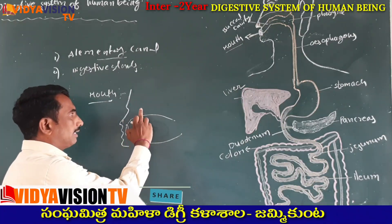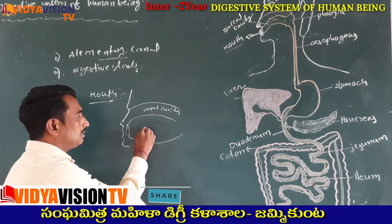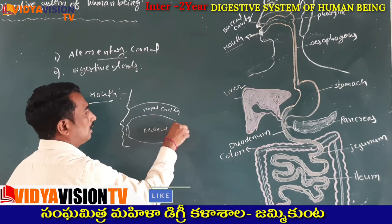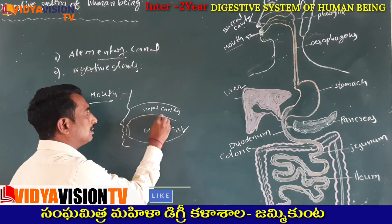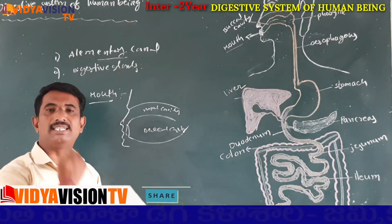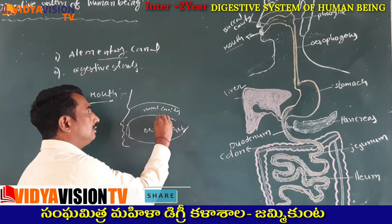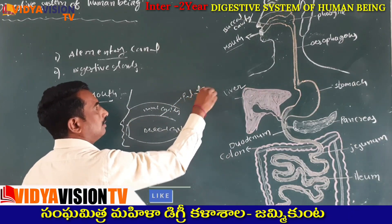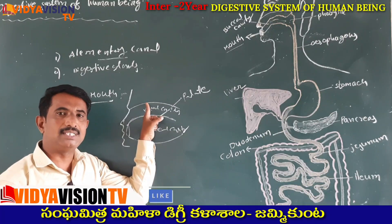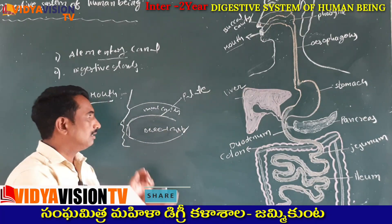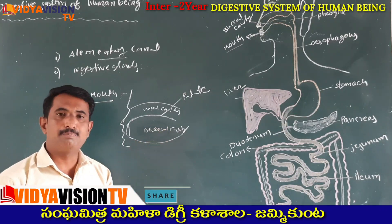Inside the buccal cavity, observe here — this is called the nasal cavity. The nasal cavity and buccal cavity are both separated by the palate. The roof of the buccal cavity is called the palate. The palate separates the dorsally located nasal cavity and the ventrally located buccal cavity.